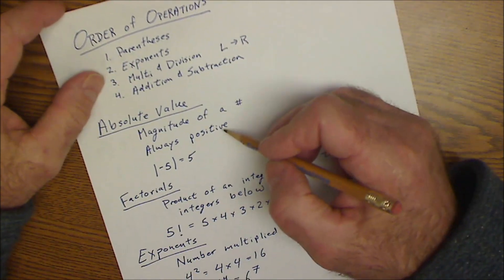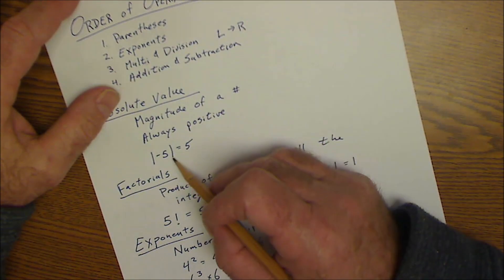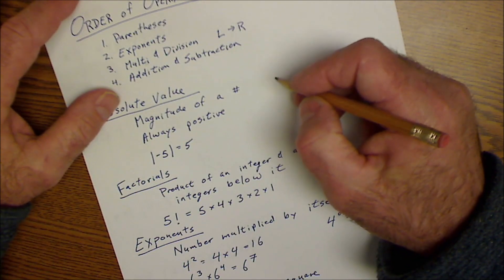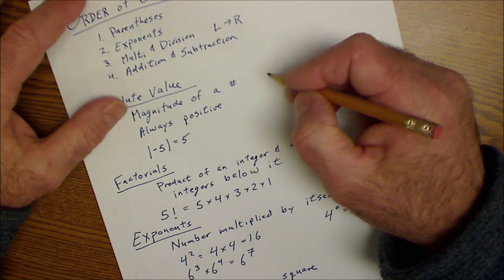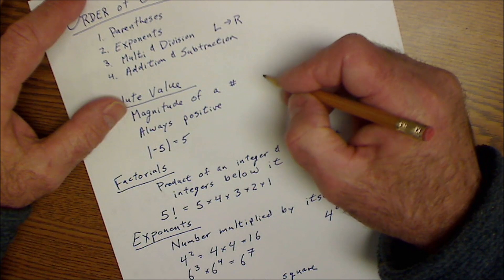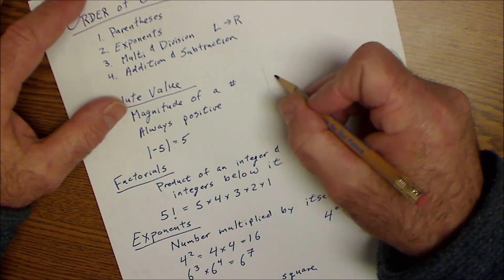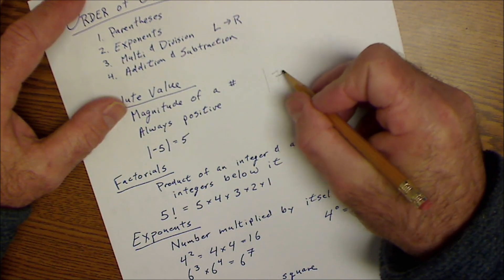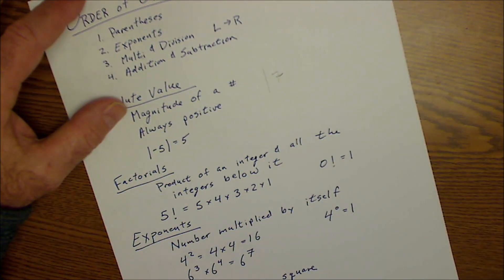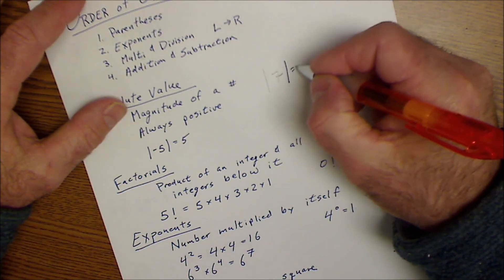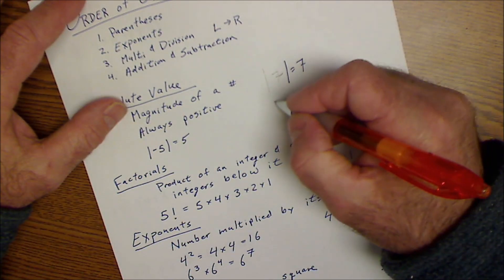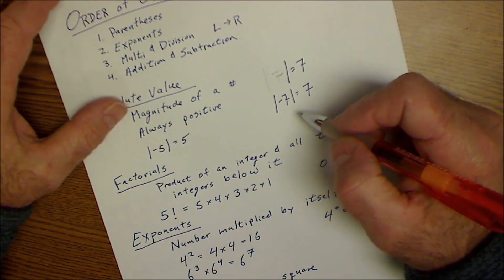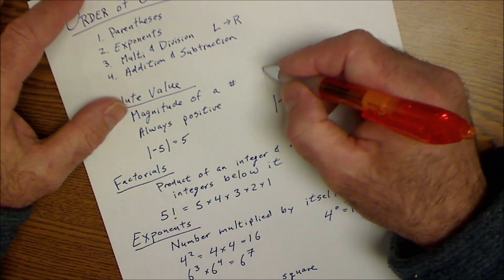Absolute value is the magnitude of a number, represented with two straight bars. It's really how far away you are from zero on the number line. So the absolute value of seven is still just seven, and the absolute value of negative seven is also seven. It just makes whatever you have positive.